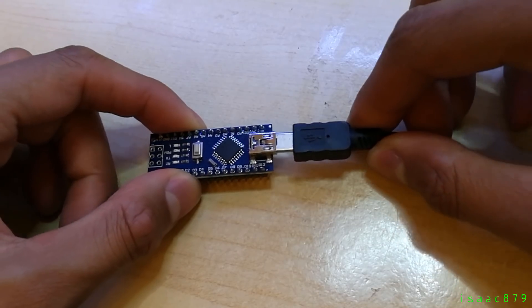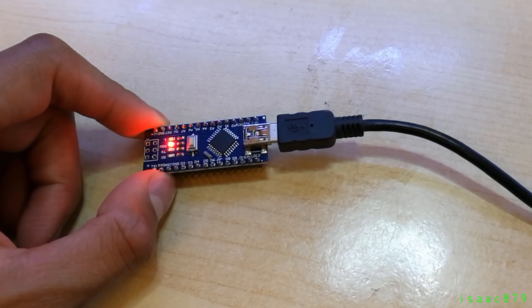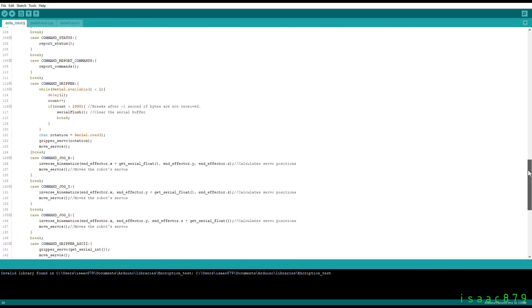The Delta robot is controlled by an Arduino Nano, so it's programmed in C++ using the Arduino IDE. I'm not going to go into any detail of the code because it will take too long, but you can find it on my GitHub repository.